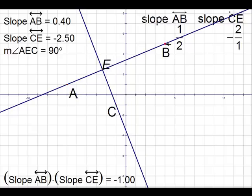And if we take negative 2.5 for the slope of line CE and write it as an improper fraction, it will be negative 5 over 2.